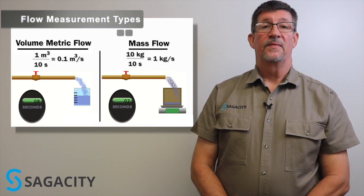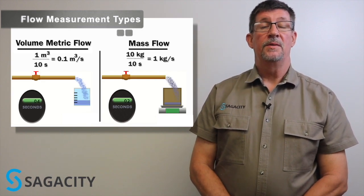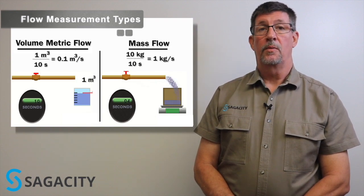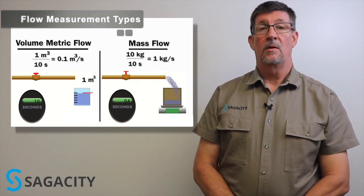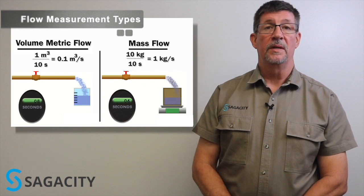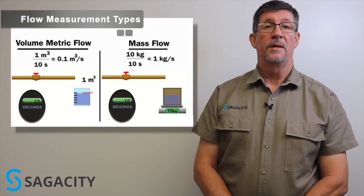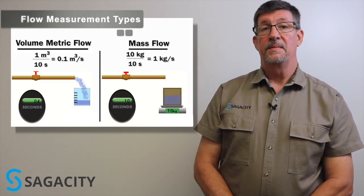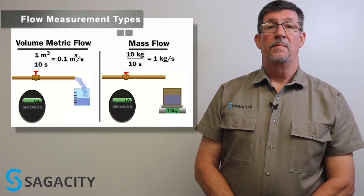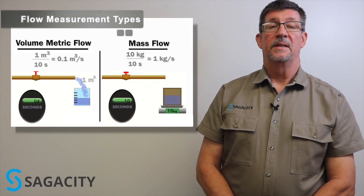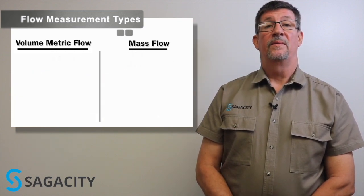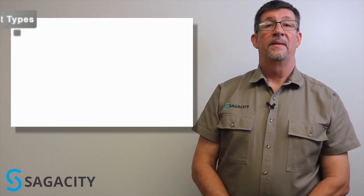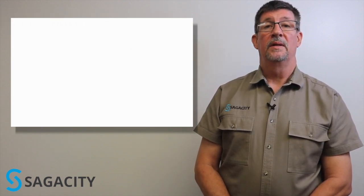Where your density remains fairly constant, you'll probably end up using a volumetric flow meter. If you have a change in temperature or pressure that may affect density, or multiple constituents in the stream, or a stream that may change compositions, you'll probably want to use a mass flow meter with some compensating device built in. Now let's talk about the different technologies available in industry today.